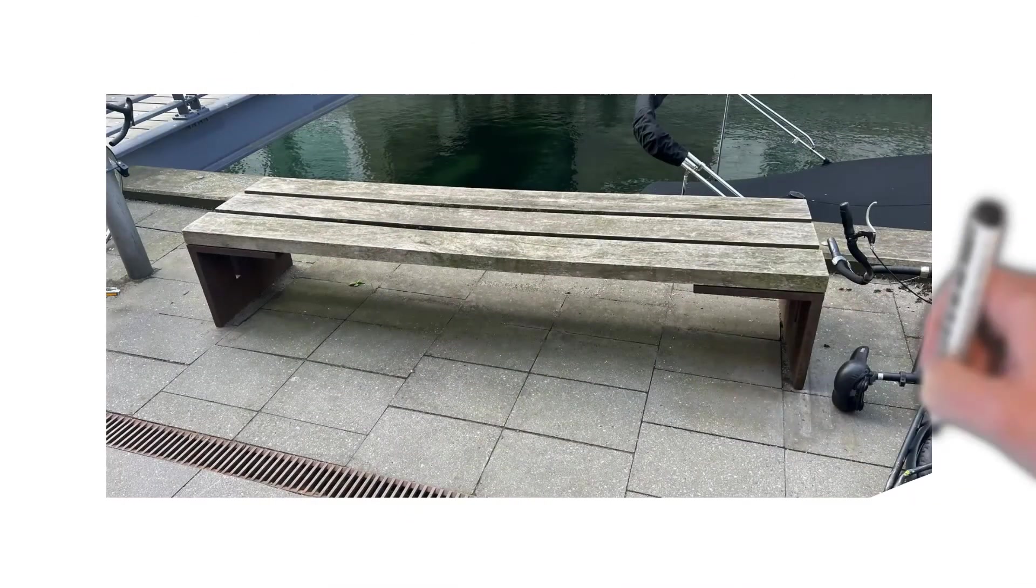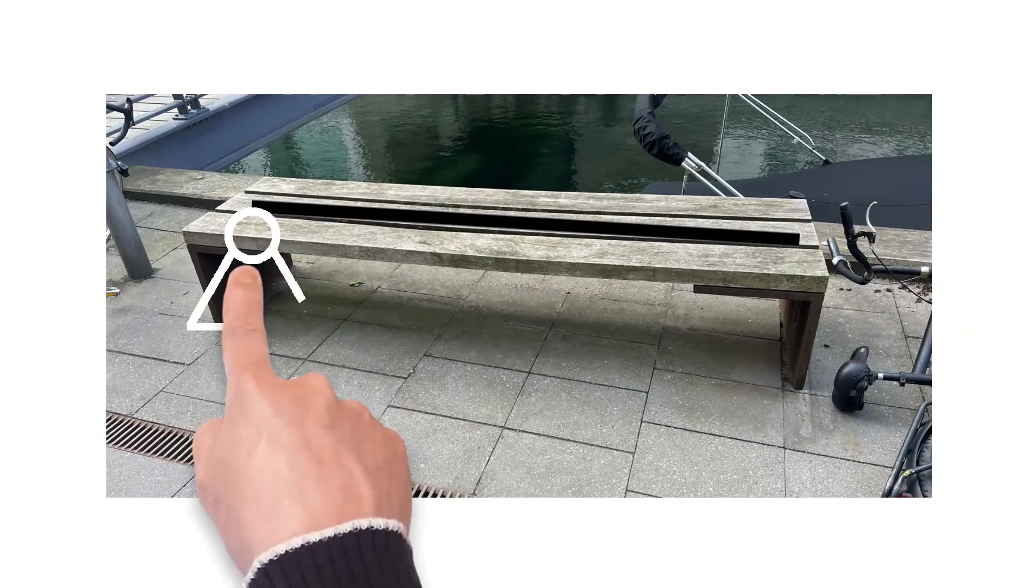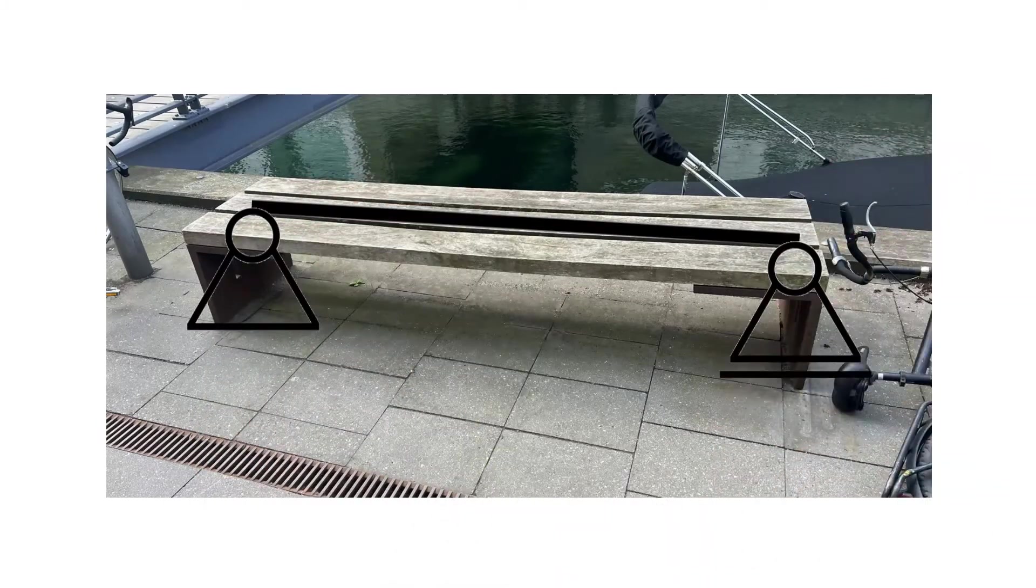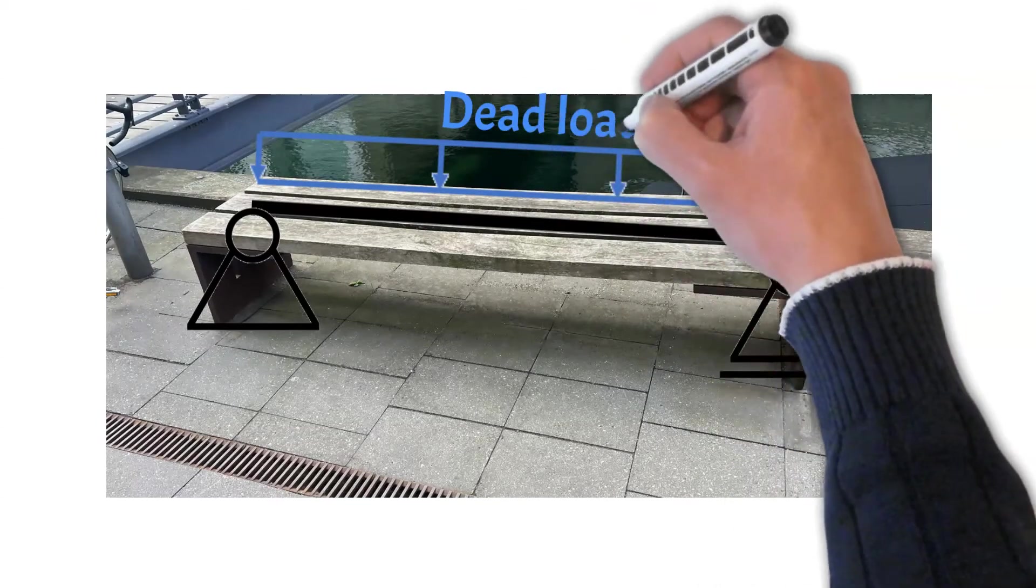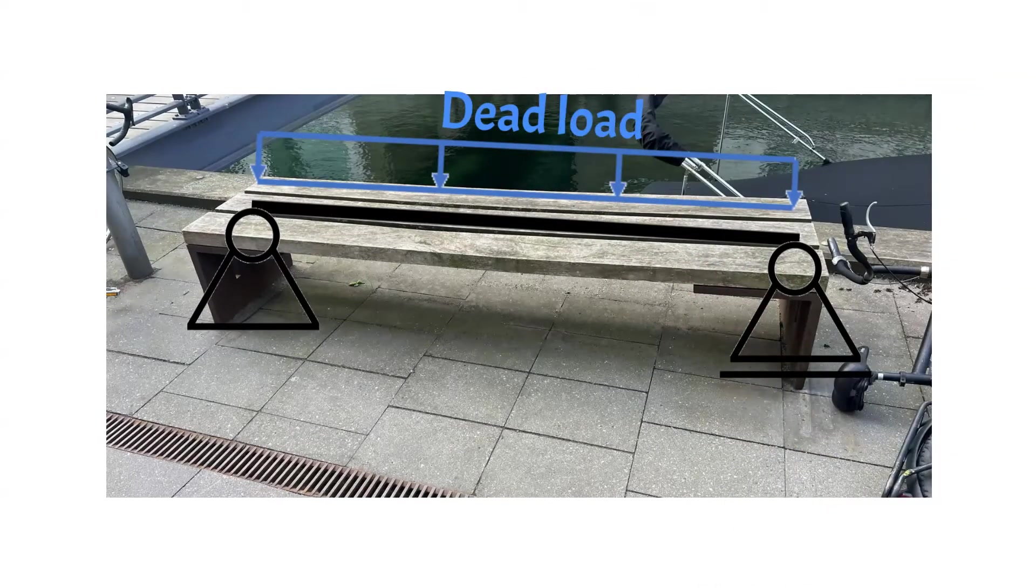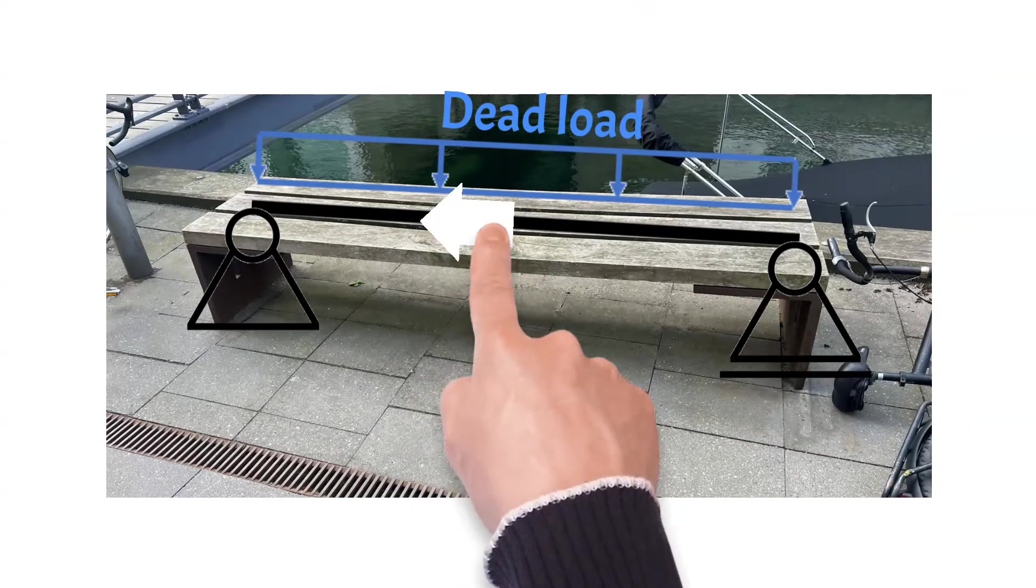Let's have a look at an example. The wooden panels of the bench are beams which are simply supported by the steel angles. The loads on the beams are, for example, self-weight of the beams and people who sit on it.